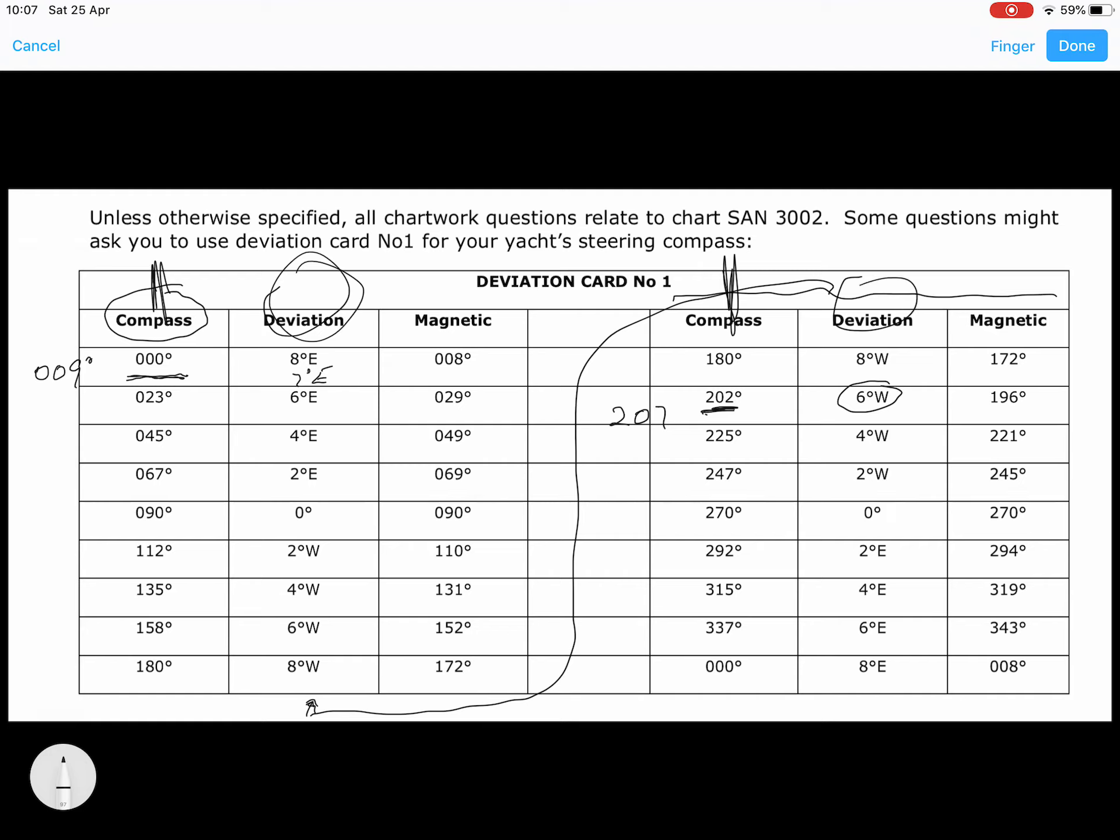But it might happen that you need to be working with, say they give you a number of 230 magnetic. That's going to be about halfway between these two, so you're going to work with 3 degrees west.